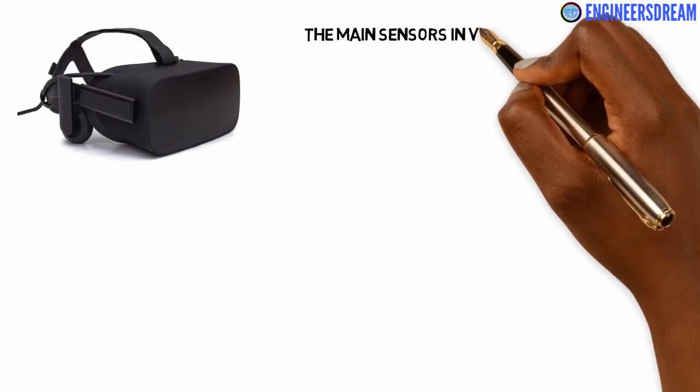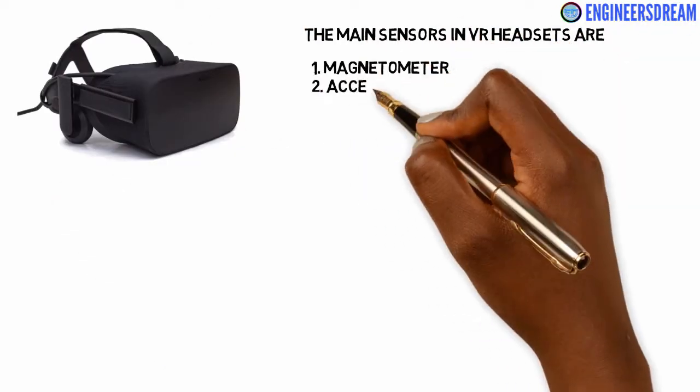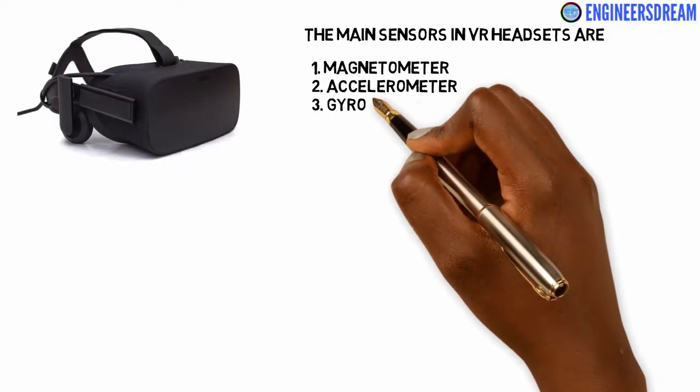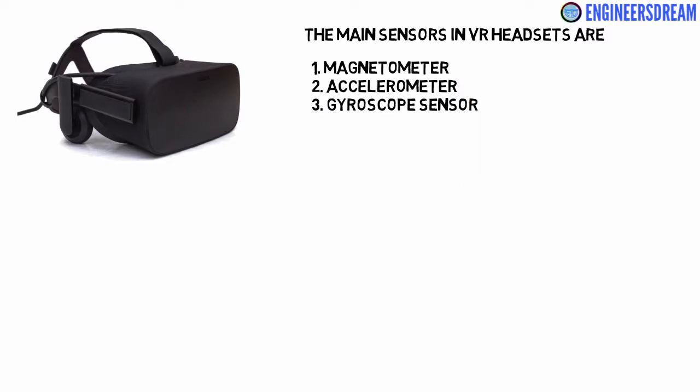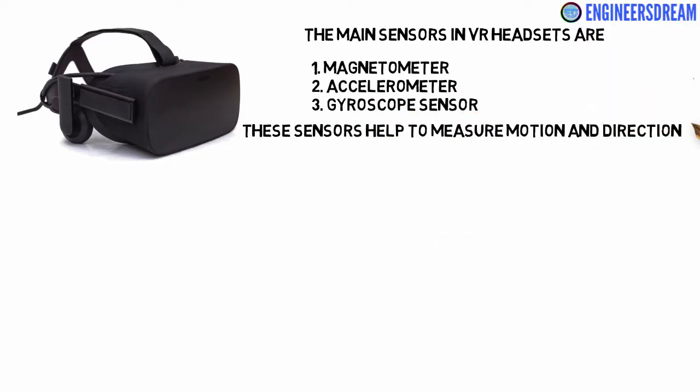The main sensors used in these VR headsets are the magnetometer, accelerometer, and gyroscope sensors, which measure motion and direction in 3D space.